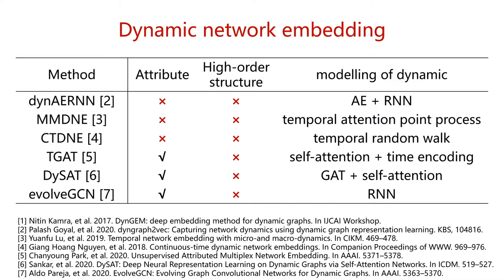And EvolveGCN uses recurrent neural network to update the parameters of graph convolutional neural network to capture the dynamics of the network. Although these methods have their own advantages, whether they can optimally model network dynamics still needs to be discussed. But they did not consider how to solve question 2. They did not consider how to use the high-order structure of the network to assist in learning of dynamic embedding.